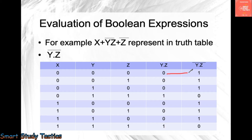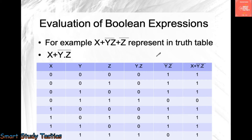Now we get the complement — the opposite of y·z. The opposite of each value: zero becomes one, one becomes zero — so we get the complement column. Now we add x to get x + (yz) bar: zero plus one is one, zero plus one is one, and so on. You can read out the values from the table.